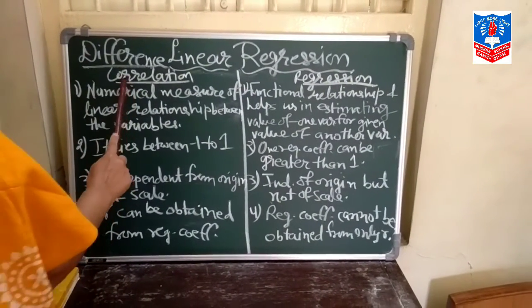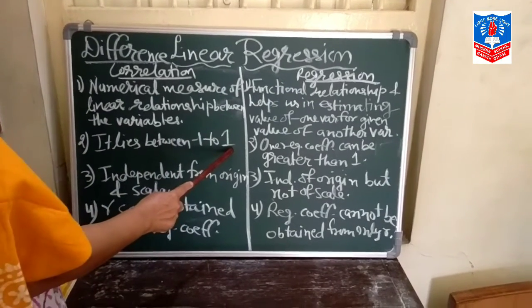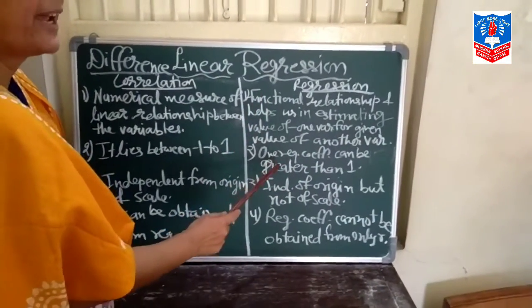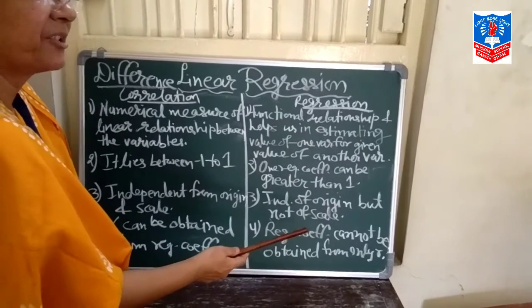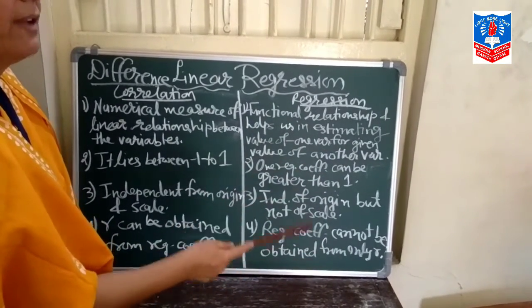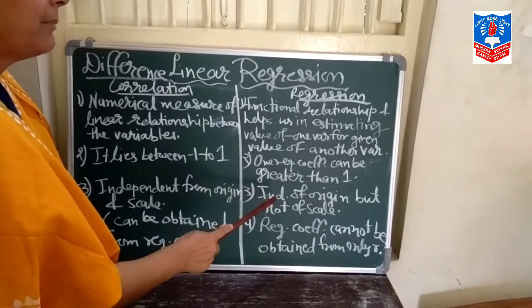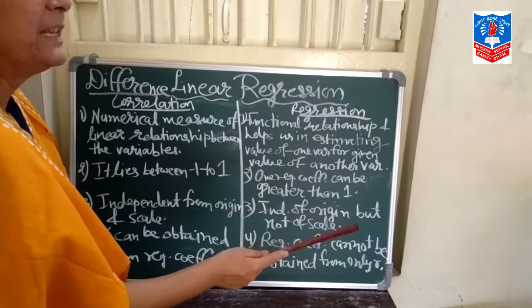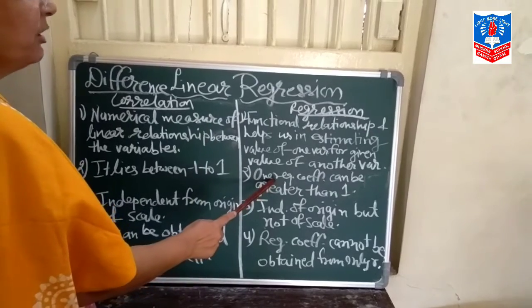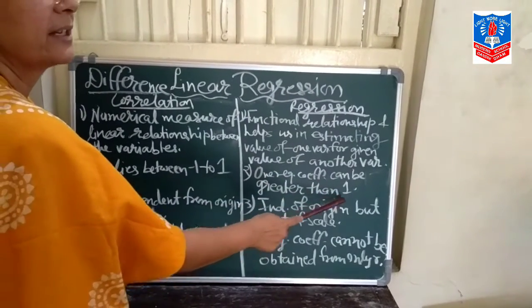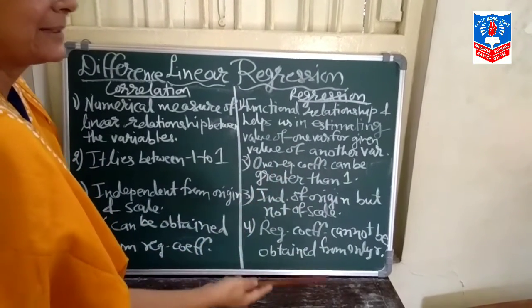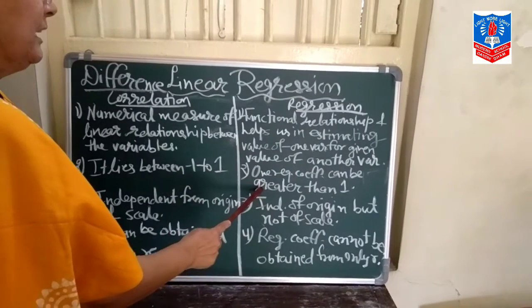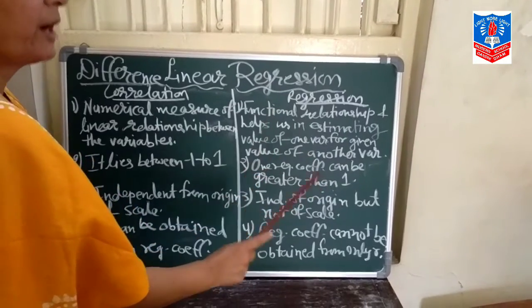The second difference: R always lies between minus 1 to plus 1, while regression has two coefficients — B_YX for the Y on X regression line, and B_XY for the X on Y regression line. In your syllabus it is only Y on X, so we have done only B, which is actually B_YX. Of these two regression coefficients, one can be greater than 1 and the other will obviously be less than 1. So R lies between minus 1 and plus 1, while a regression coefficient can be greater than 1.